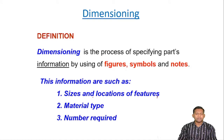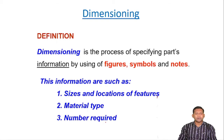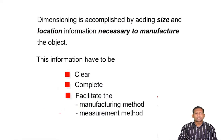Sizes means the dimensions and location of features — features like holes, and the exact location. Also the material type: what type of material is used to manufacture the product, and the number required. So this complete information is what dimensioning is all about.